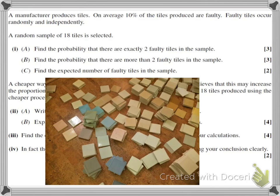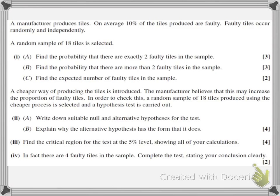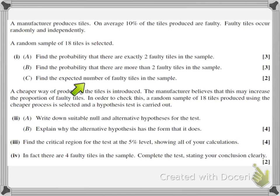As usual, I'll be picturing some tiles and imagining that 10% of these tiles are faulty. Looking through the question, I can see that later on it's going to become a hypothesis test question. This means it's quite likely to be a binomial distribution question, and that's going to give us the key to answering the first section.